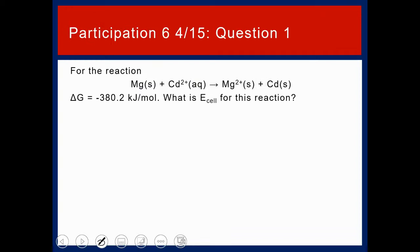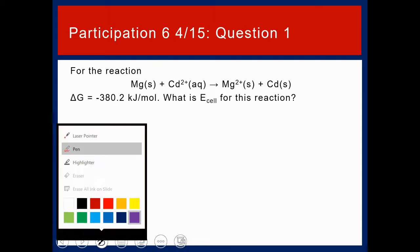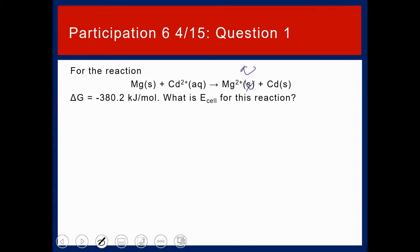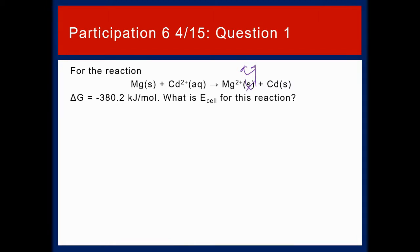Participation question one. For the reaction, magnesium solid plus cadmium two plus aqueous goes to magnesium two plus aqueous plus cadmium solid. Delta G is equal to negative 380.2 kilojoules per mole. What is E cell for this reaction? That's question one for participation six. I want to make sure you get that answer up on Blackboard. It's due Wednesday, April 15th at 11:55 p.m.